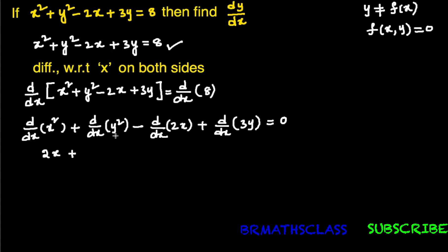For the derivative of y², the given function is in terms of y but we are differentiating with respect to x, so we use the chain rule. Imagine y as x — the derivative of x² with respect to x is 2x, so the derivative of y² with respect to x is 2y multiplied by dy/dx.